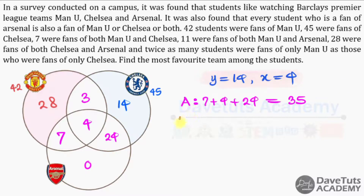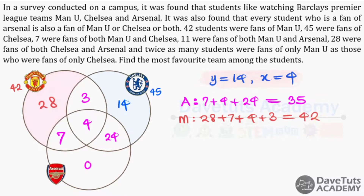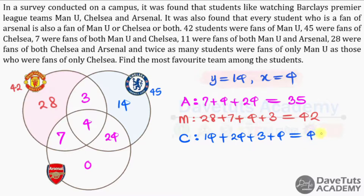Man U's total: 28 + 7 + 4 + 3 = 42 — confirming our given data. Chelsea's total: 14 + 24 + 3 + 4 = 45 — also confirming the given data. The only unknown was Arsenal, which we've now found to be 35.